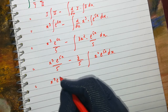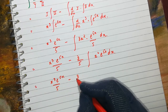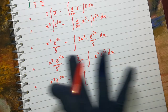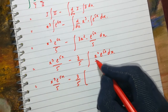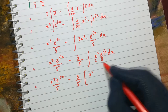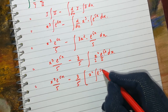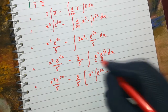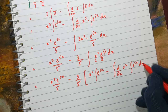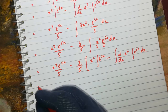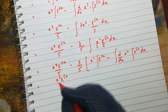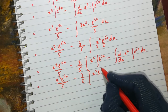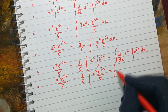Writing x³ · e^(5x)/5 minus (3/5), I put a bracket to separate this portion. Inside: first function x², second function e^(5x). Applying IBP: x² times the integral of e^(5x), minus the whole integration of the derivative of x² times the integral of e^(5x), dx.